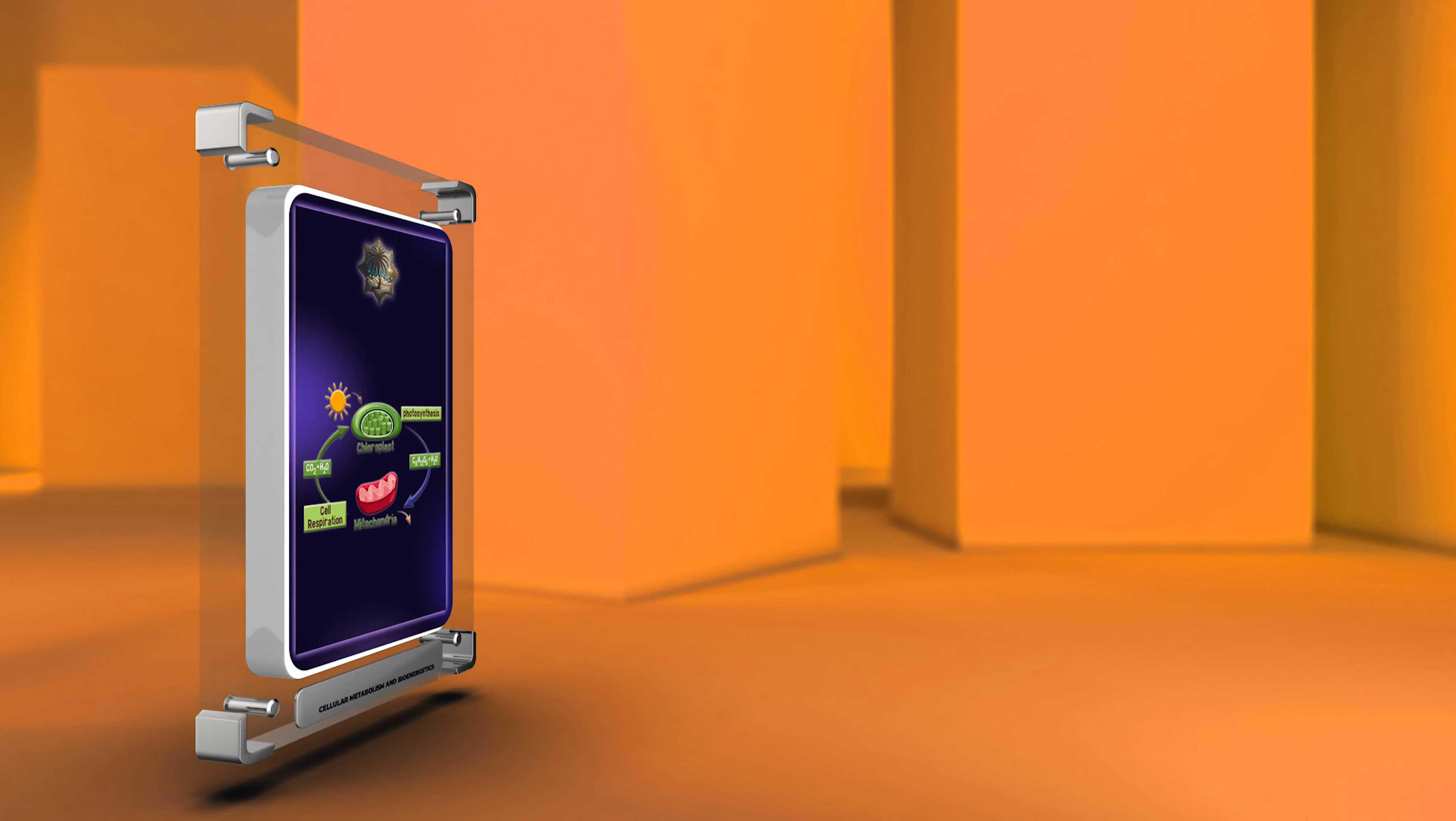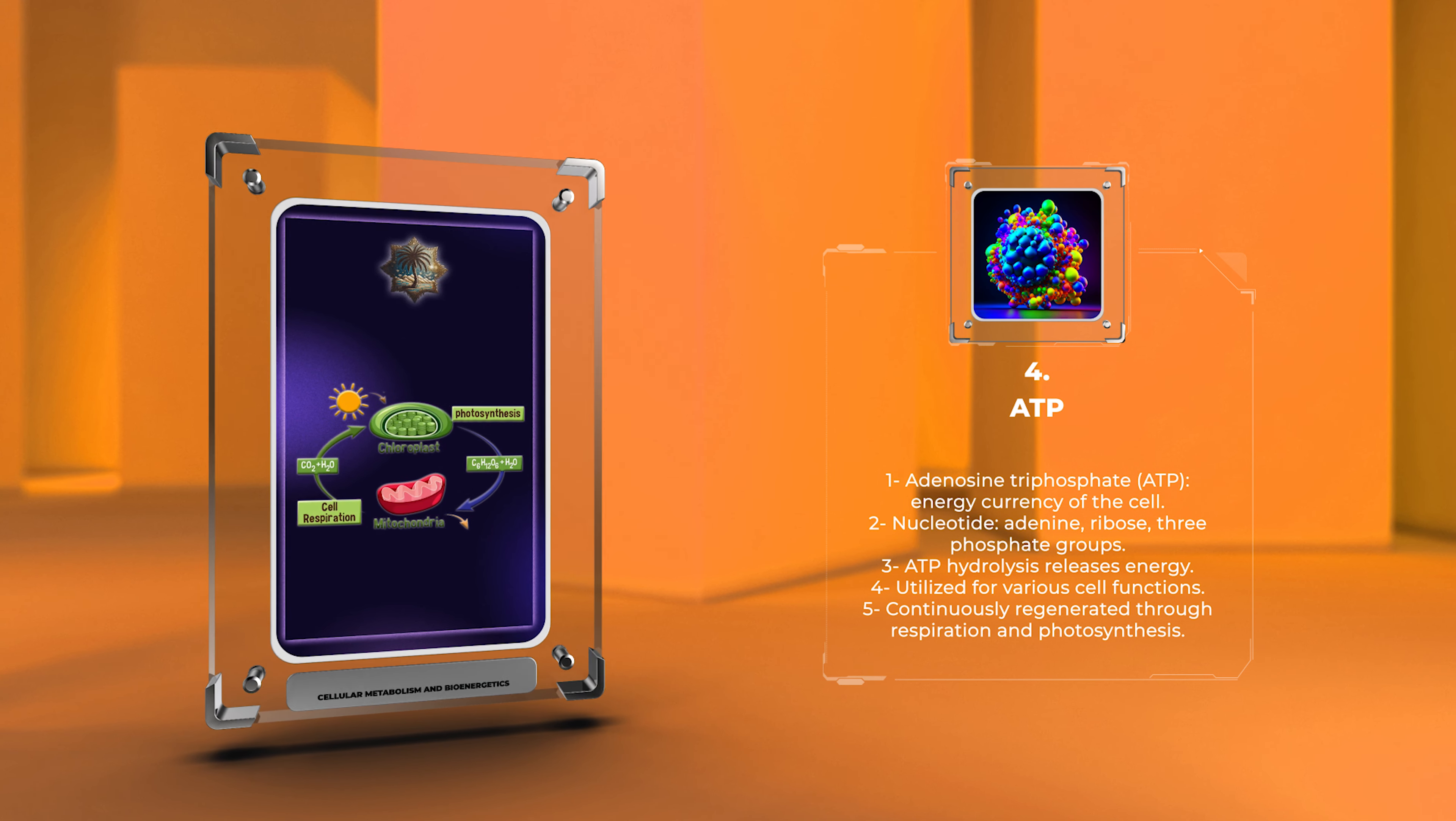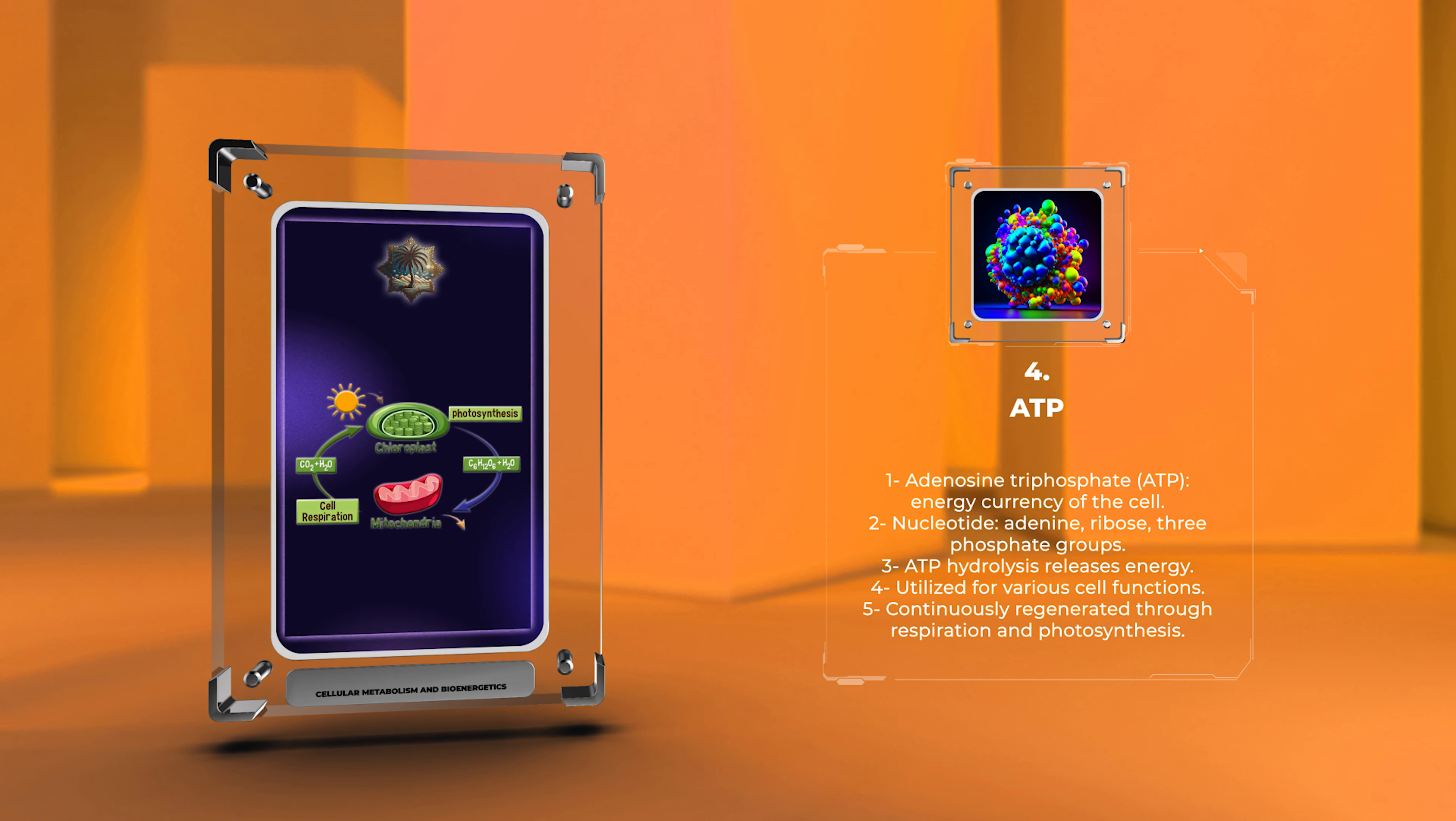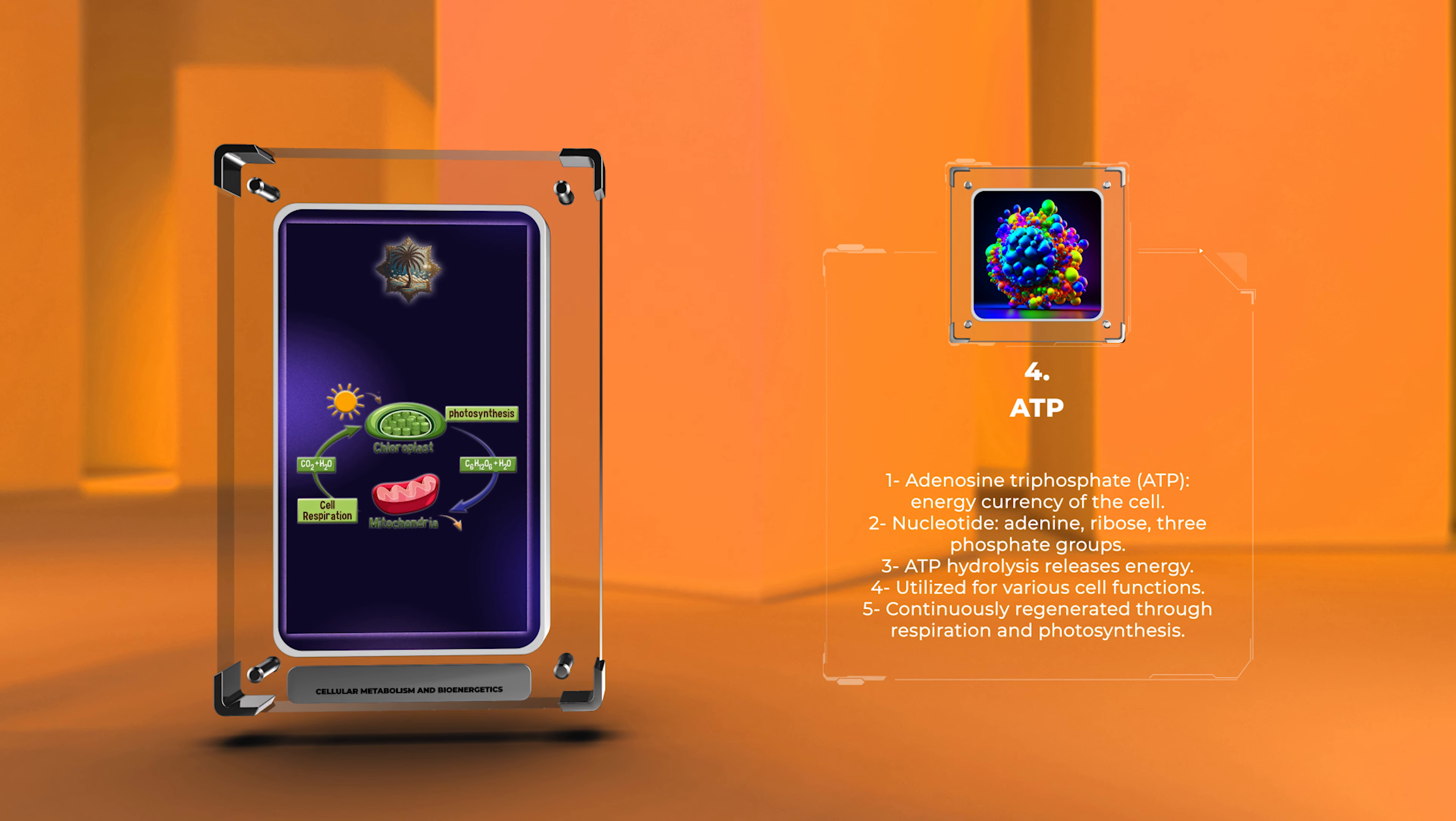Adenosine triphosphate, ATP, is the energy currency of the cell. It is a nucleotide composed of adenine, ribose, and three phosphate groups. ATP hydrolysis releases energy which can be utilized by cells to perform various functions such as muscle contraction, active transport, and synthesis of macromolecules.